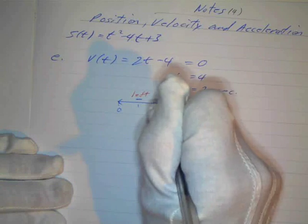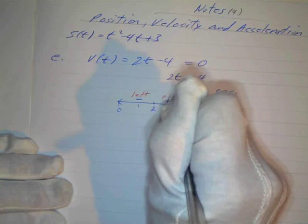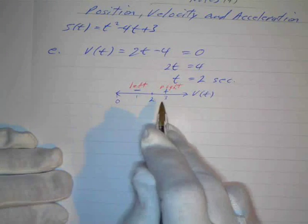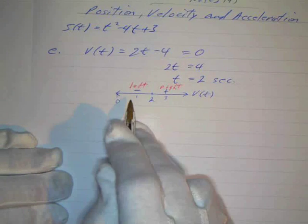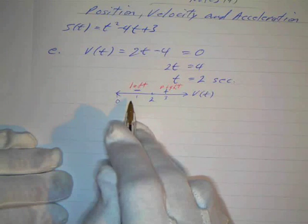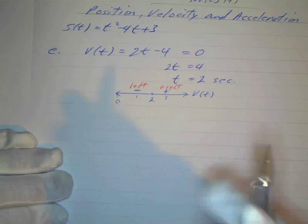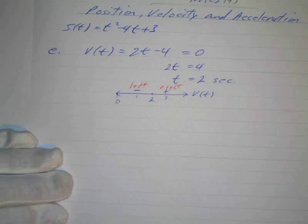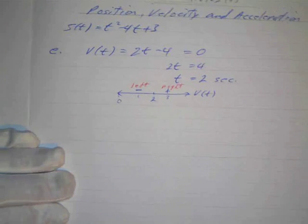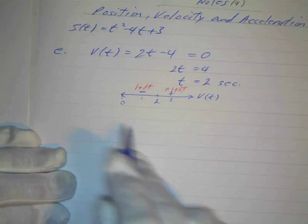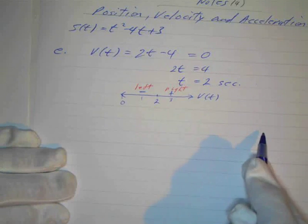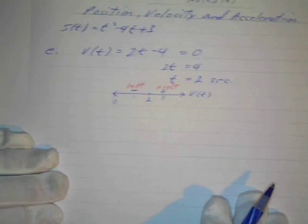So I'm moving to the left before t equals 2, and moving to the right after t equals 2. If the velocity is positive, I'm moving to the right; if negative, I'm moving to the left. Or on a vertical line, this would be up or down. So we do change directions. We want to check this because the particle could stop and then keep moving in the same direction without actually changing direction.